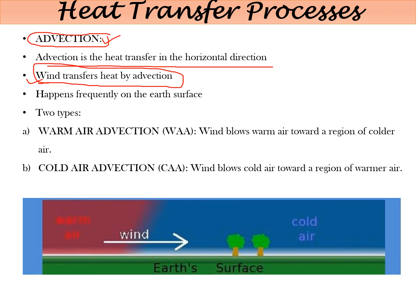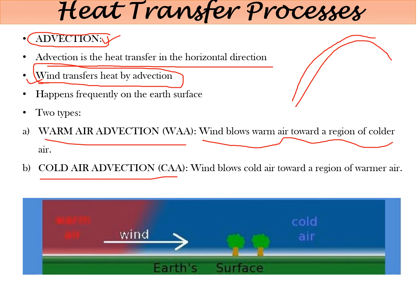Advection happens frequently on the Earth's surface and has two types: warm air advection and cold air advection. In warm air advection, wind blows warm air towards a colder region. For example, suppose there is a snow-covered mountain — a cold region — and nearby there is a burning source producing hot air. That hot air will travel and move over the cold air. This is warm air advection, where wind transfers warm air over cold air.